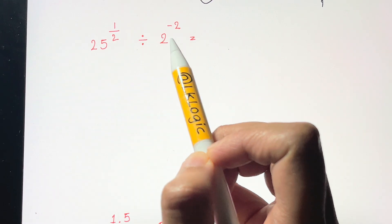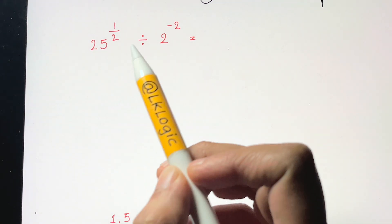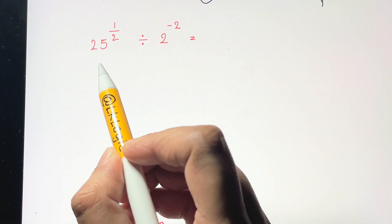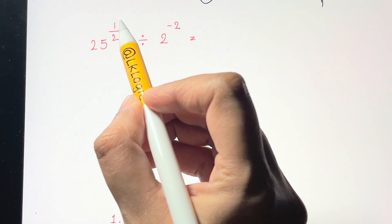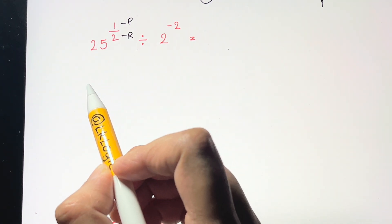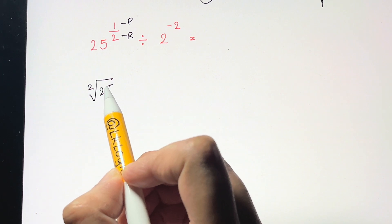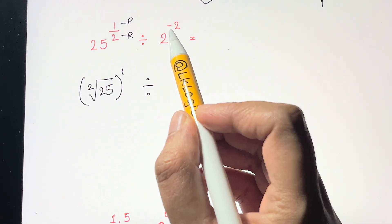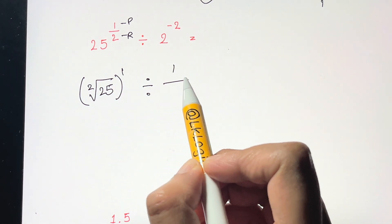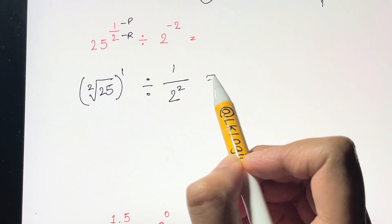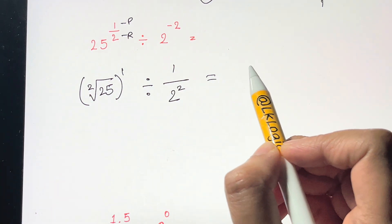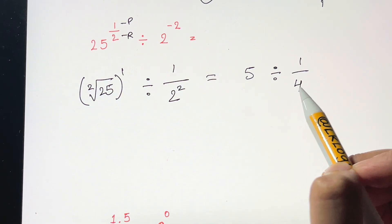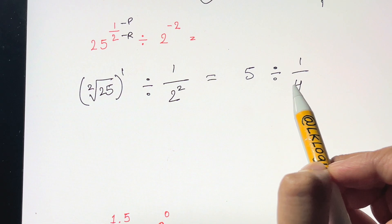Next example: 25 to the power of 1/2 divided by 2 to the power of negative 2. We have both a fractional exponent and a negative exponent. For 25 to the 1/2, the root is 2 and the power is 1, giving the square root of 25. For 2 to the negative 2, take the reciprocal: that gives 2 squared. So we have square root of 25, which is 5, divided by 1 over 2 squared, which is 4.